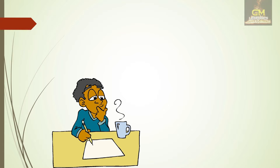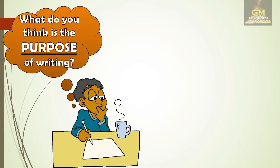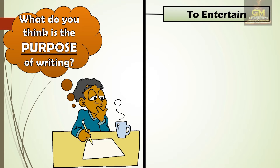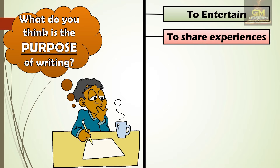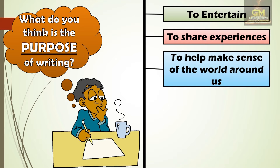Now, before we discuss about creative writing, let's answer this question: What do you think is the purpose of writing? We all know that a lot of people write for different reasons. Some of the common reasons include to entertain other people, or also to entertain himself or herself. Writing can also be used to share a particular experience that the writer has and wants to tell other people. Also, writing can be used to help make sense of the world around us, to explain how things are going, why things are happening, and what is going on around us.